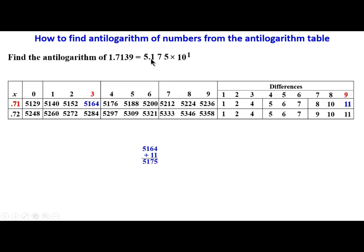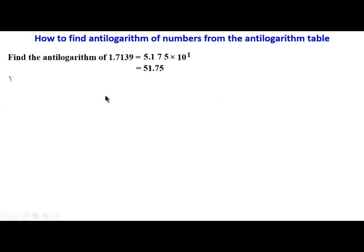Then you can now write it in ordinary form. That is 5.175 times 10, which gives 51.75. And that is the antilogarithm of 1.7139.